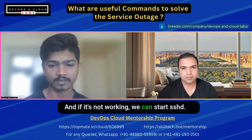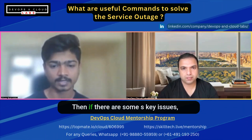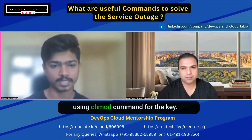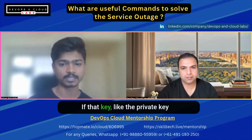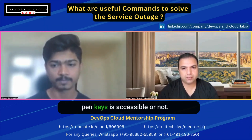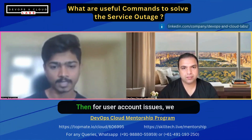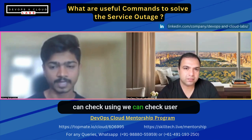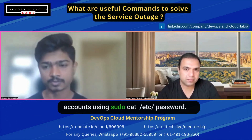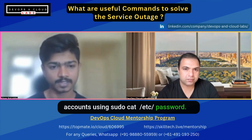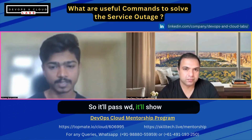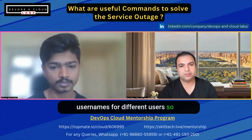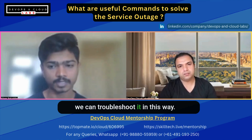If SSH is not working, we can start sshd. If there are SSH key issues, we can check the permissions using the chmod command on the private key — the PEM key — to verify it is accessible. For user account issues, we can check user accounts using: sudo cat /etc/passwd, which will show usernames for different users.